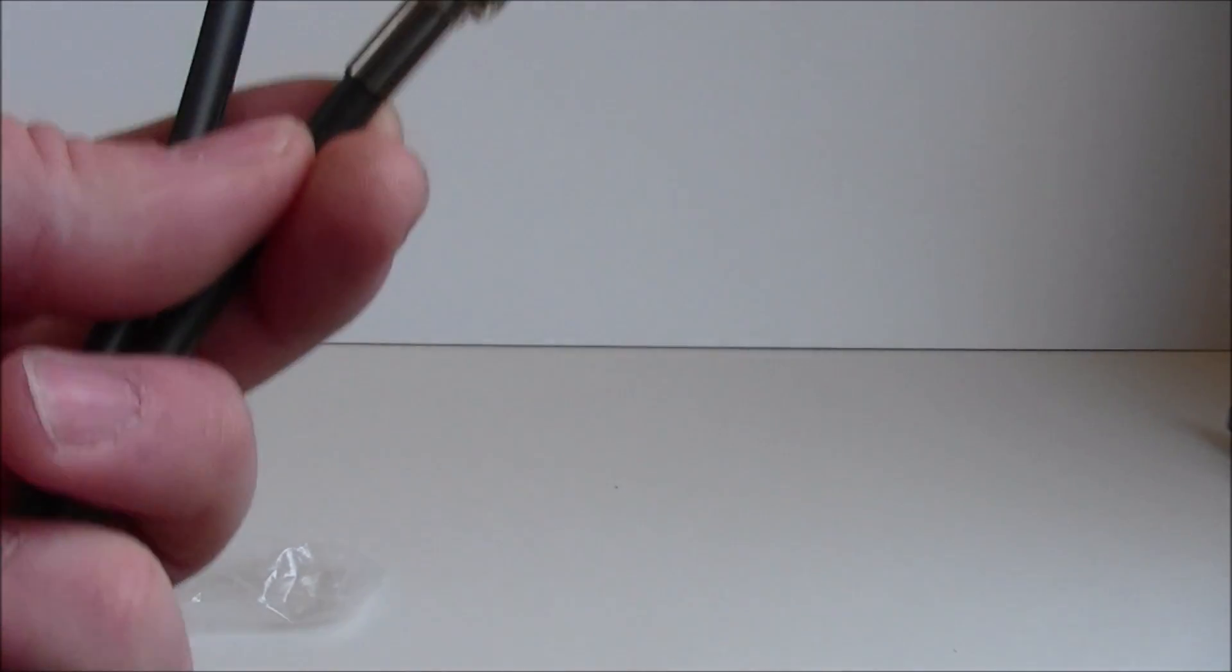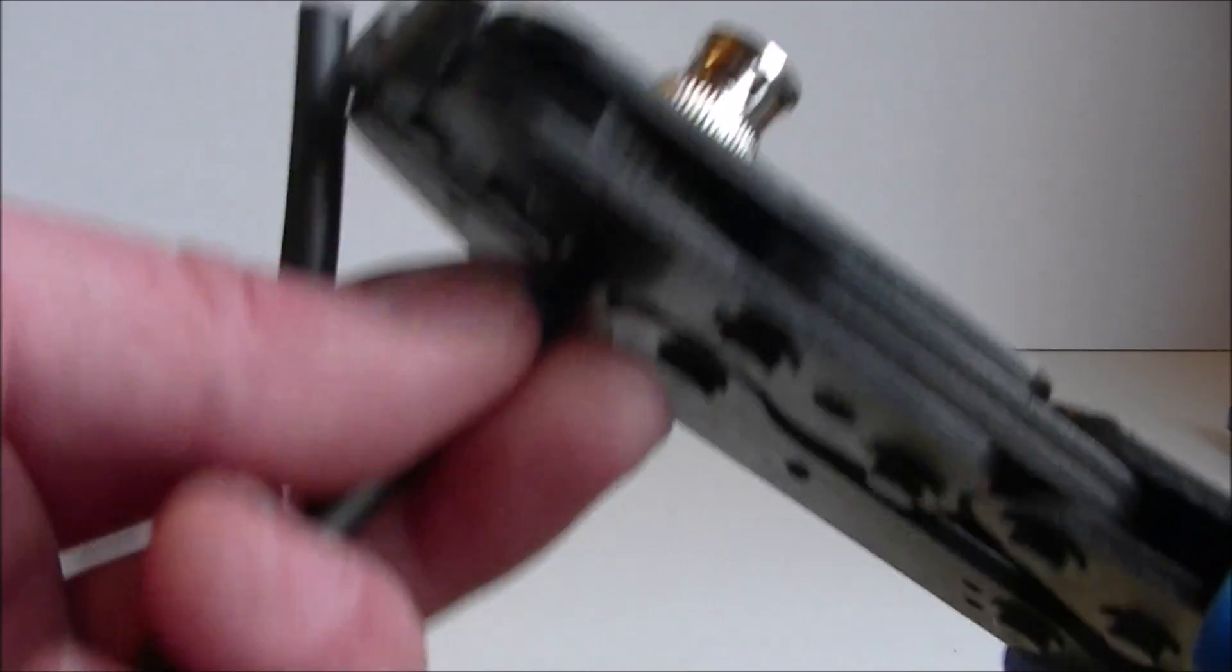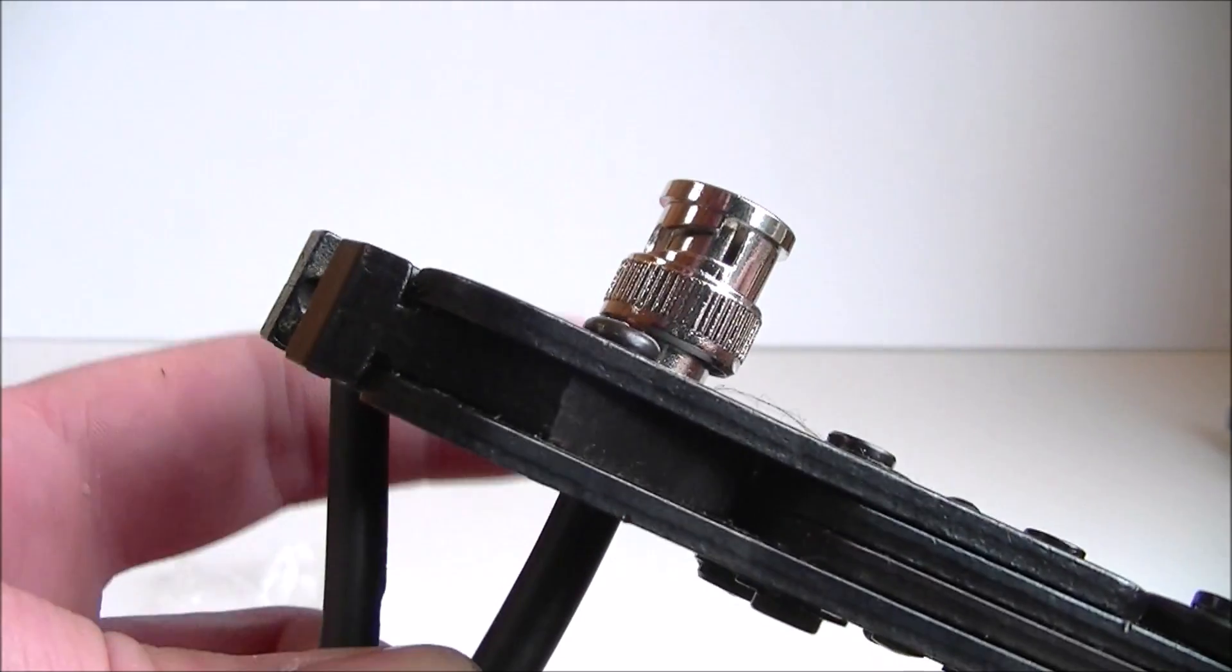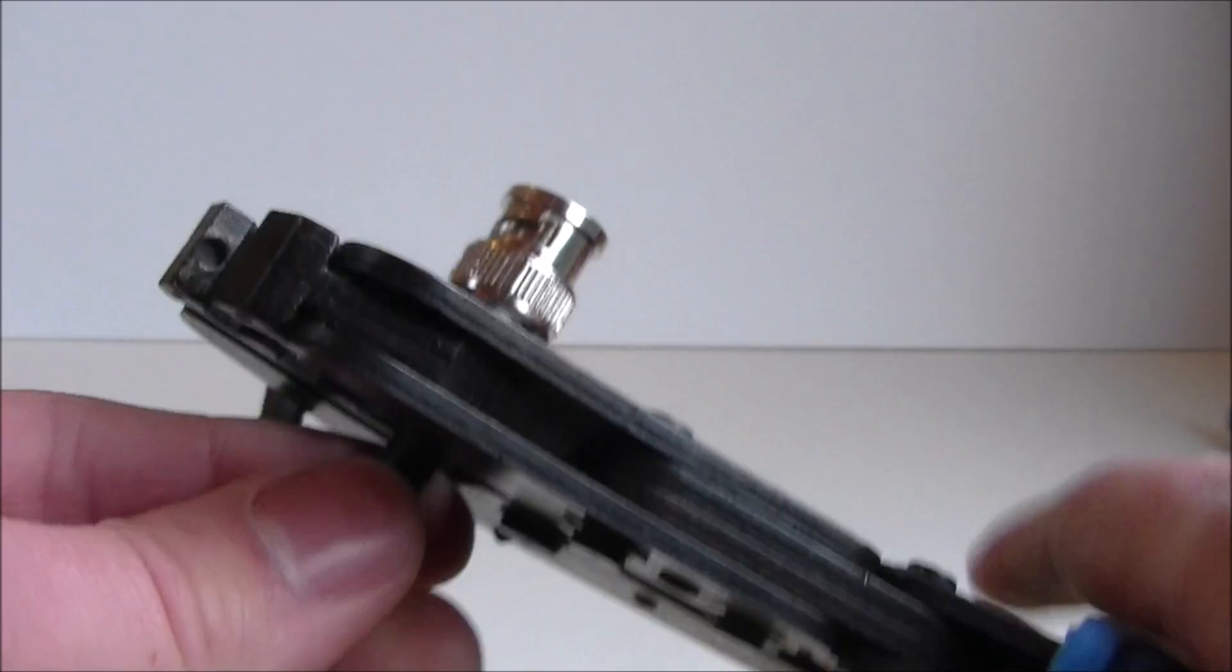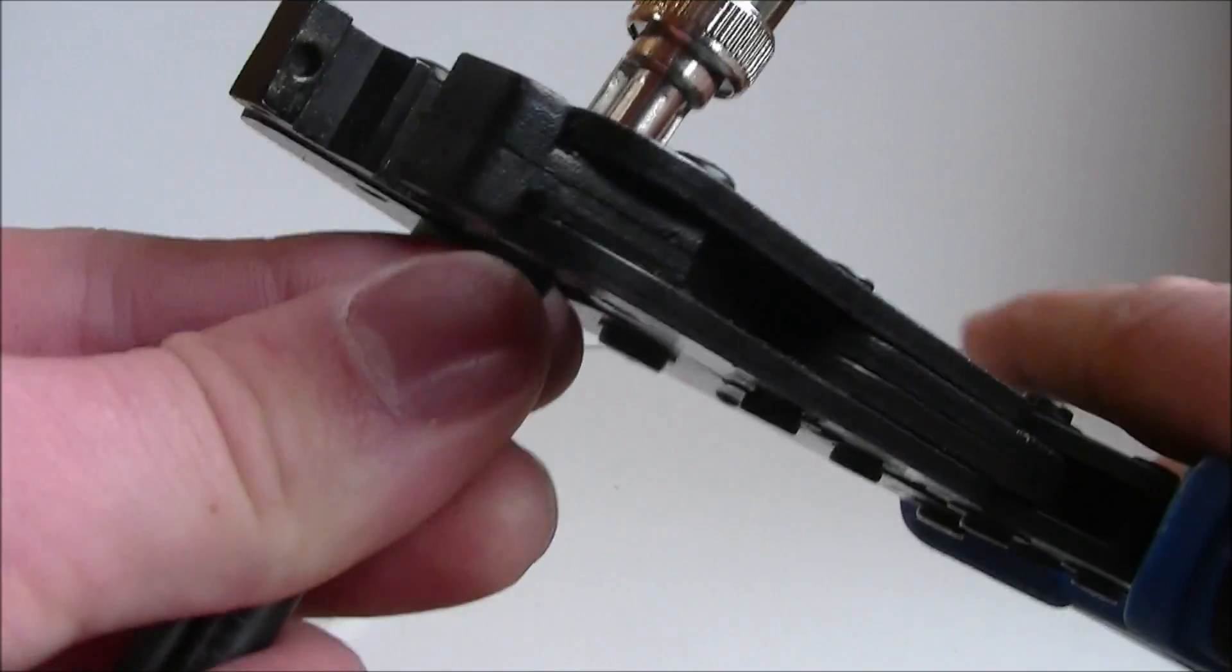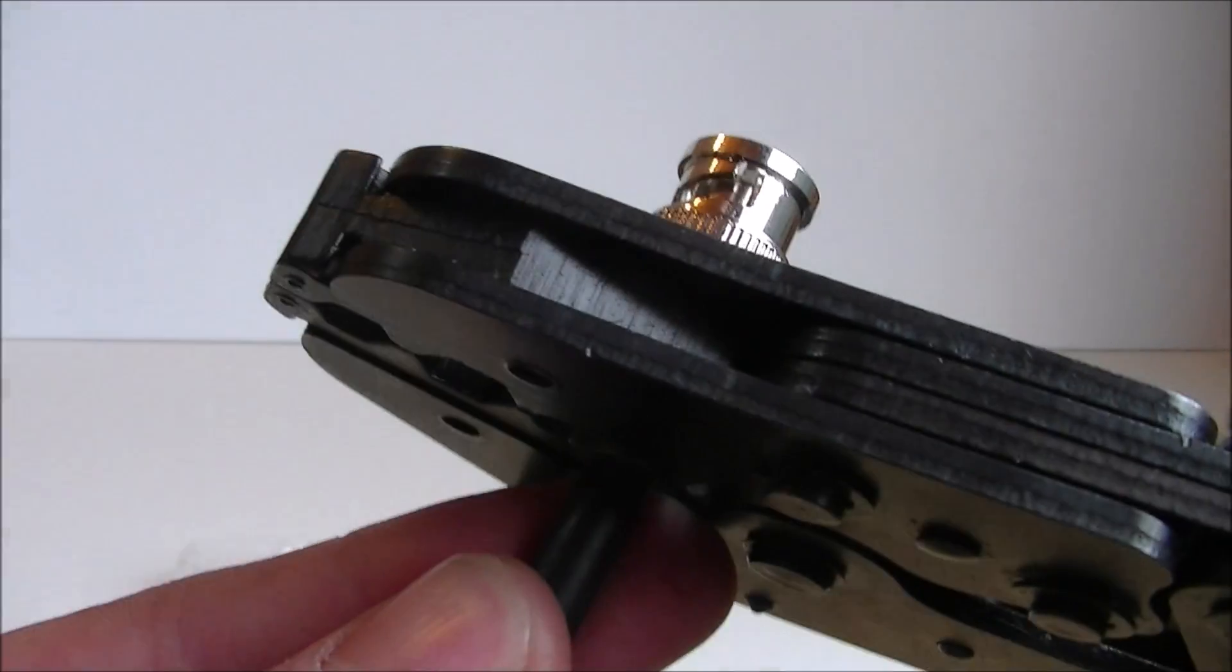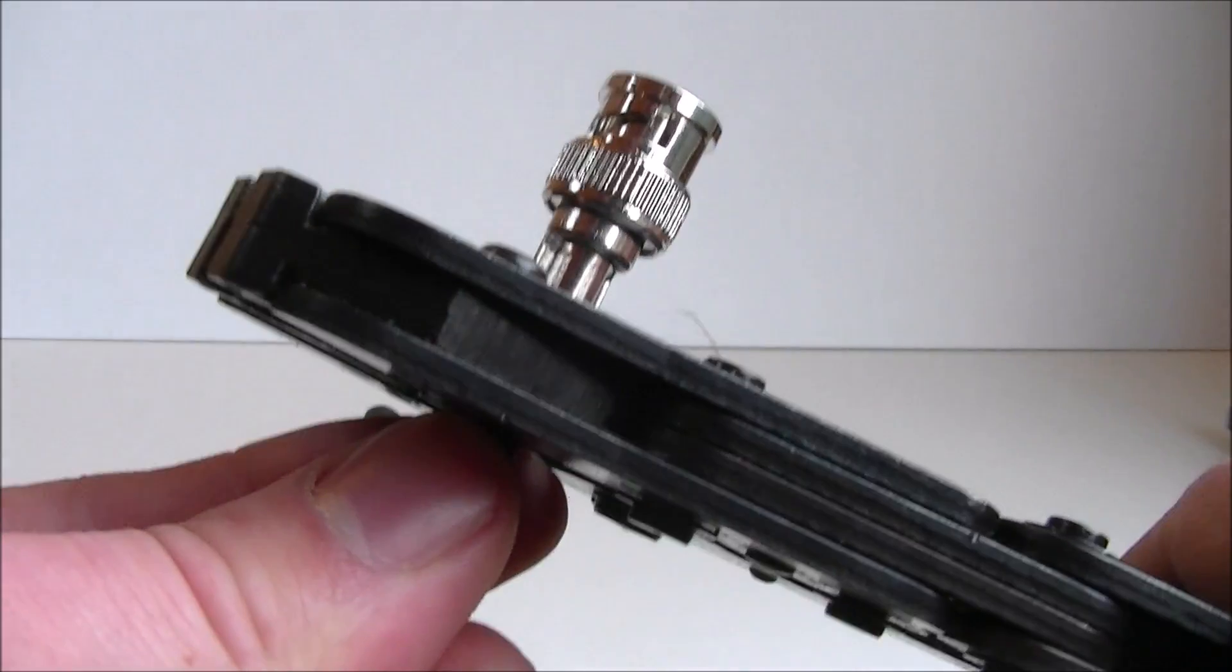And then we grab our crimp tool again. This is the final time we'll need to use it. And what we want to do, if you can see, is just crimp that onto there and just push it so it's really tight. Might want to do it a couple of times just to make sure it's properly on. All the way down, all the way down. And you should come out of that with a pretty neat looking connection.